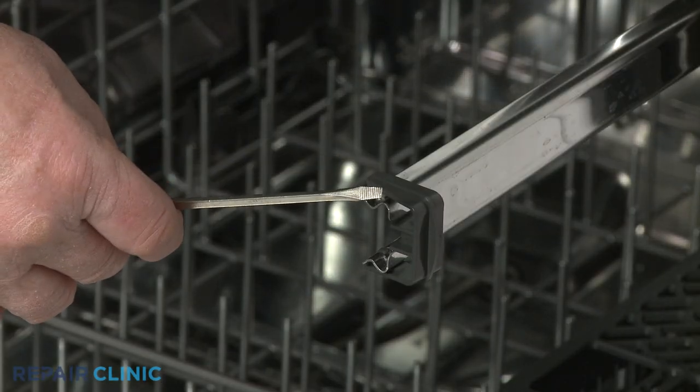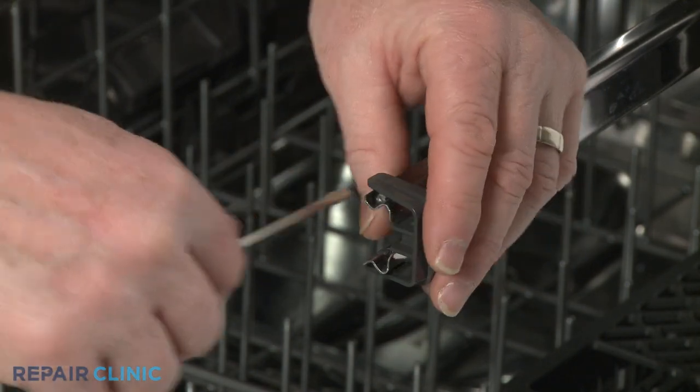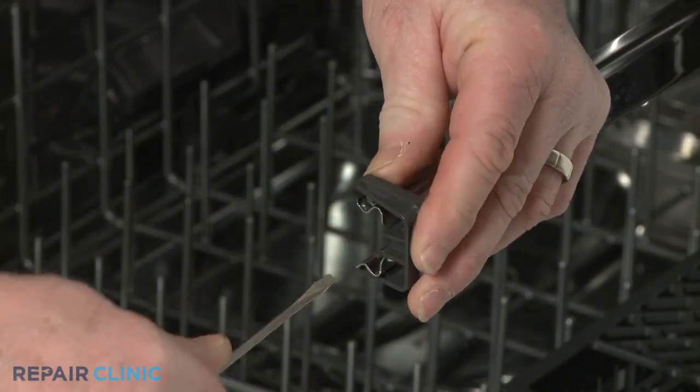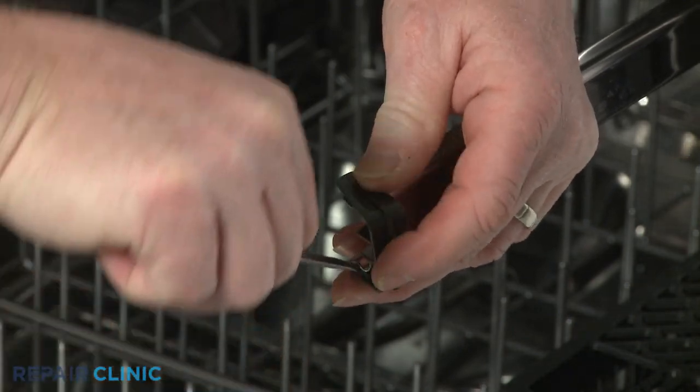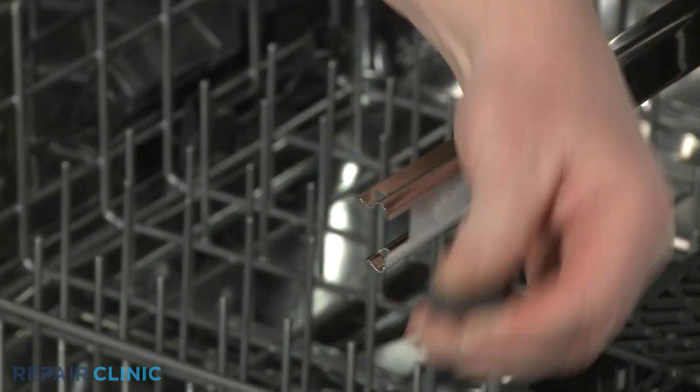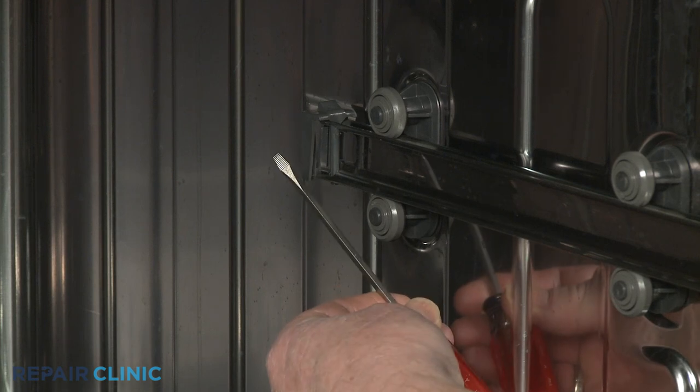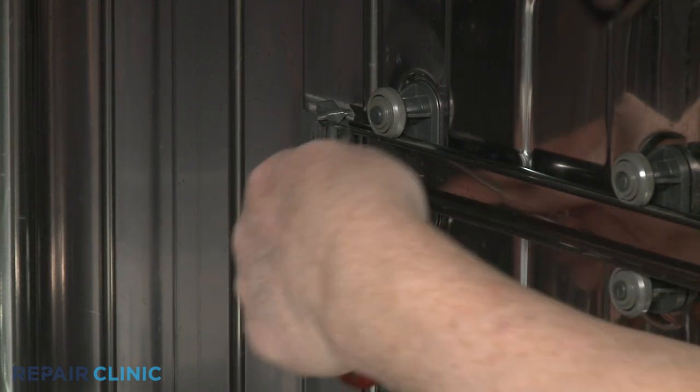Use the small flathead screwdriver to help pry the front rack stop off the rail you are replacing. Use the screwdriver to depress the retaining tab so you can lift the rear rack stop off the rail.